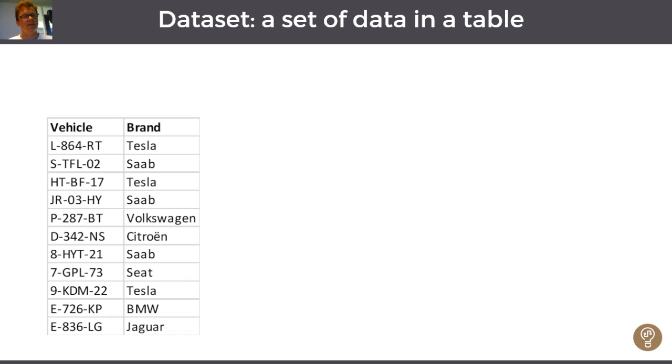In the second column there's a variable, and in this case it's a brand. It could differ from vehicle to vehicle, so it's not a constant.